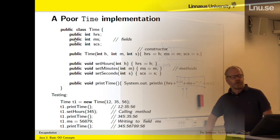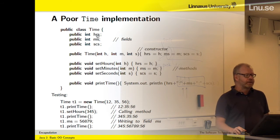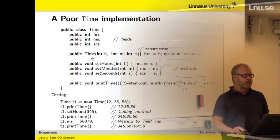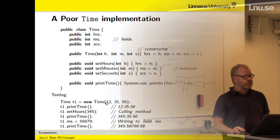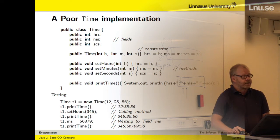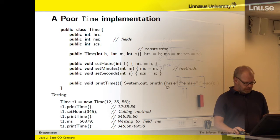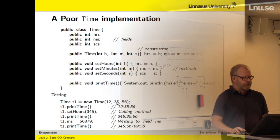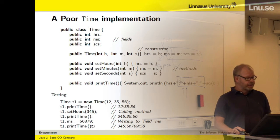Let's move to another class implementation: a public class called Time. It describes ordinary daytime — hours, minutes, and seconds. You have a constructor, so you can create a new Time object giving it the hours, minutes, and seconds. After this constructor call, we will have a Time object containing 12 hours, 35 minutes, and 56 seconds. Once I have created the Time object, I can ask it to print the time — it will print hours, minutes, and seconds. I can update the hours and set them to, say, 345, and then print again.